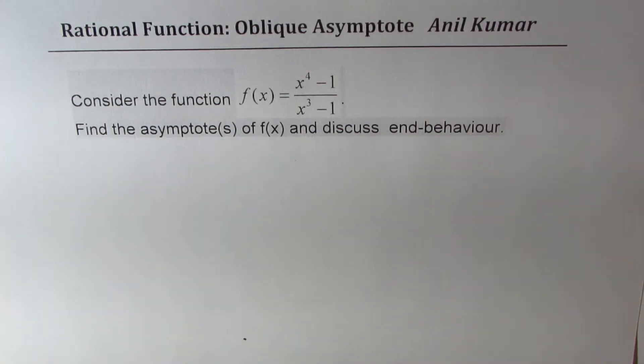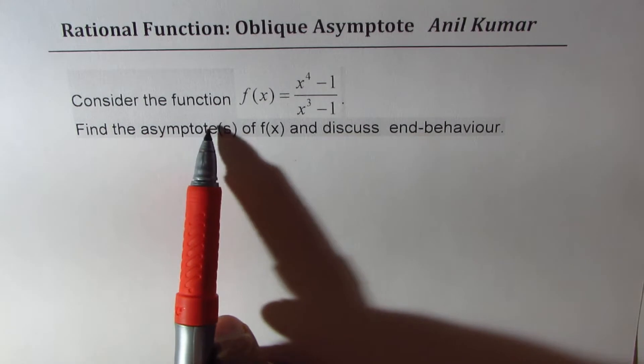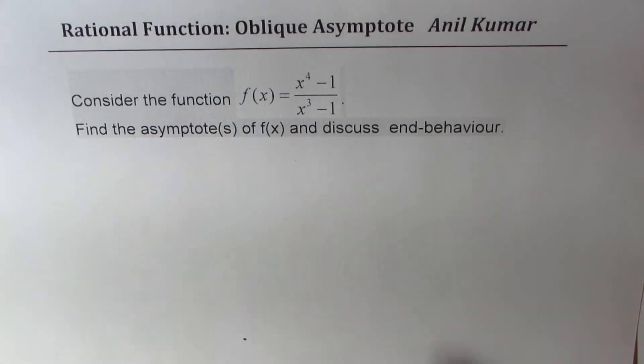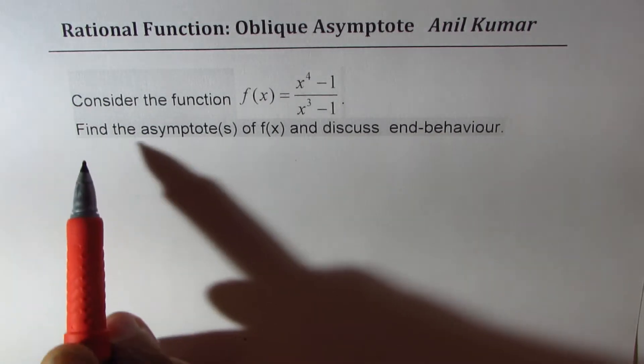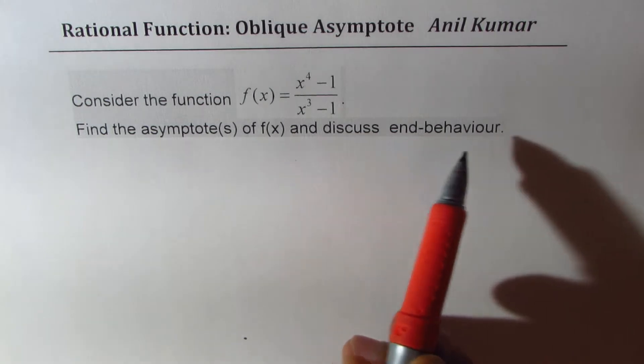I'm Anil Kumar, sharing with you a very important test question based on rational functions. The question here is, consider the function f(x) equals x to the power of 4 minus 1 divided by x cubed minus 1. Find the asymptotes of f(x) and discuss end behavior.